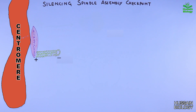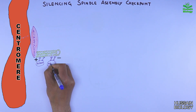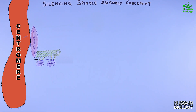We know we have the plus end and minus end of the microtubule as shown in the diagram. We also see some interaction of motor proteins with the microtubule — like the dynein motor protein that interacts with the microtubule and moves towards the minus end of the microtubule.